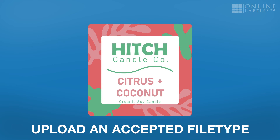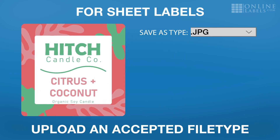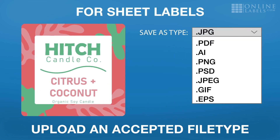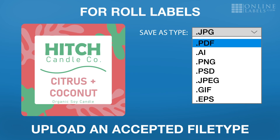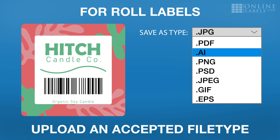Depending on the type of printed label you're ordering, there are different file types to export your design as. If you're ordering printed sheet labels, we accept a wide range of file types, but PDFs are preferred. If you're ordering printed roll labels, you should upload your design as a vector or an AI file. This will be required if your roll label design has a barcode or QR code in it, or you're getting your design printed on clear roll labels.